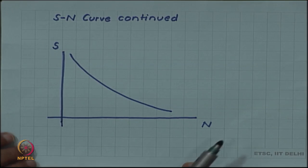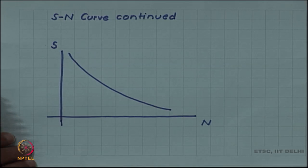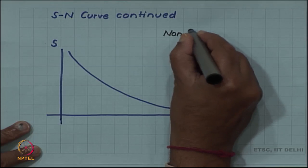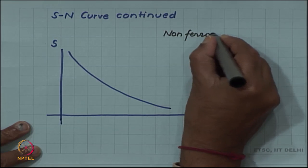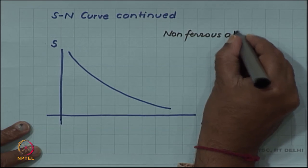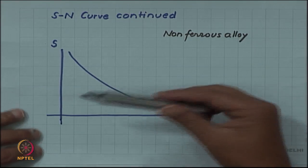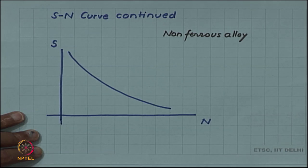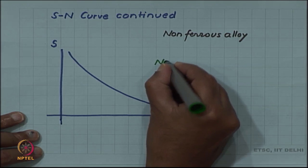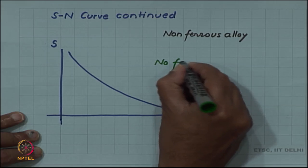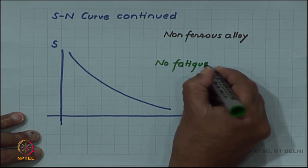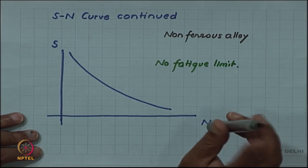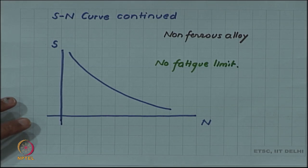But a different kind of behavior is seen in some non-ferrous material, non-ferrous alloy, where there is no fatigue limit in this case. So the curve does not become horizontal. There is no fatigue limit, so no fatigue limit can be specified.